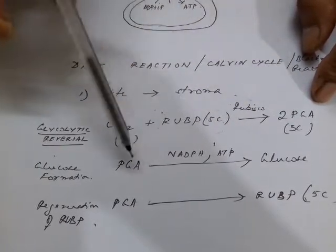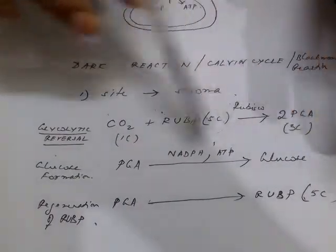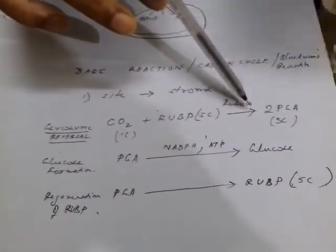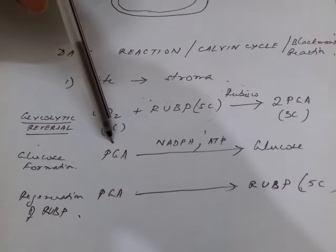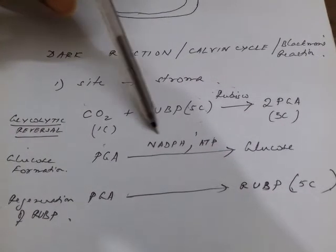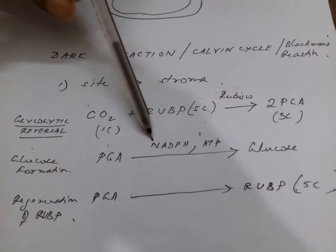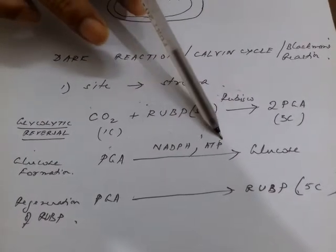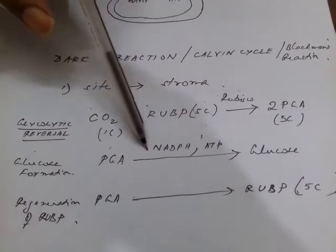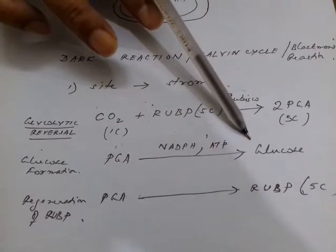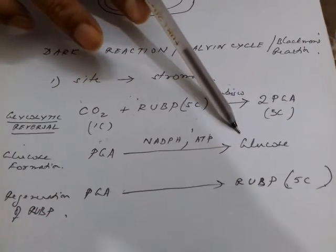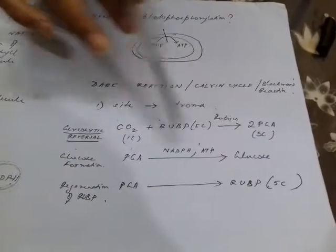Some of this PGA — phosphoglyceric acid — in the presence of NADPH obtained from the light reaction, and energy in the form of ATP also obtained from the light reaction, is converted to form glucose. Glucose is the main primary product of photosynthesis.